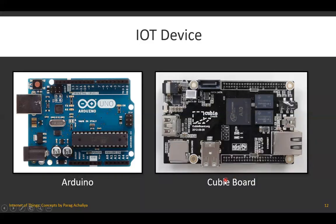Another IoT device is the QB board, which has a similar structure to Raspberry Pi with USB pins, HDMI pin, power supply port, mic, and speaker connectivity.